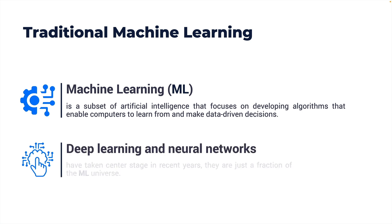Machine learning, or ML, is a subset of artificial intelligence that focuses on developing algorithms that enable computers to learn from and make data-driven decisions. While deep learning and neural networks have taken center stage in recent years, they are just a fraction of the ML universe. Before neural networks became mainstream, there was traditional or classical machine learning, which continues to be widely applicable and foundational to the field of artificial intelligence.